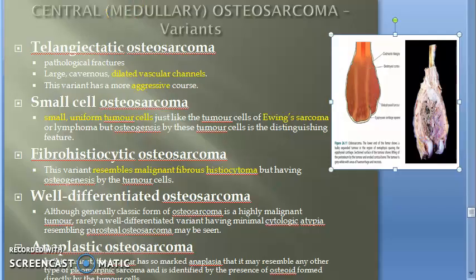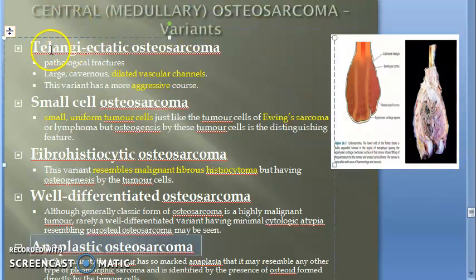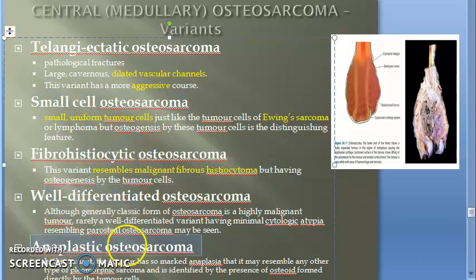Just a small topic here — this may not be very important for the exam. The variants of osteosarcoma: telangiectatic osteosarcoma, small cell osteosarcoma, fibro histiocytic osteosarcoma, well differentiated, and anaplastic (anaplastic means poorly differentiated).